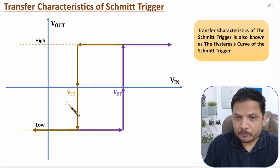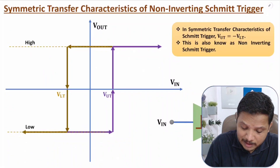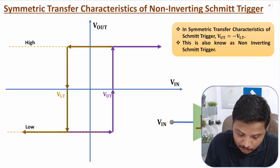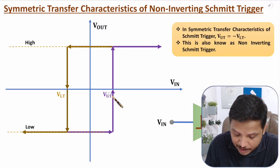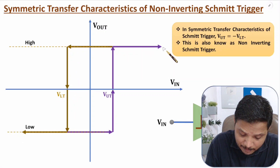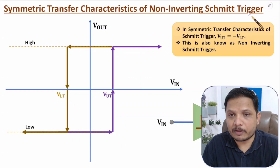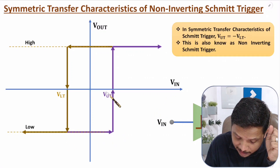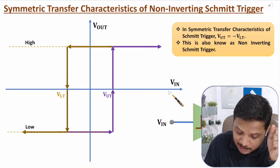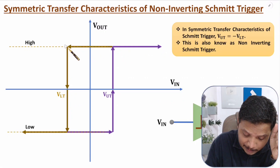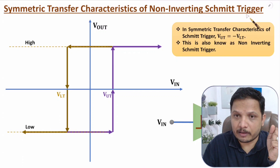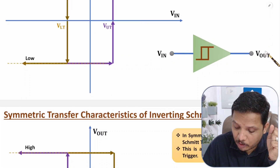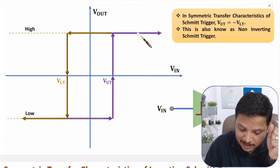Now let me explain symmetric transfer characteristics, where the characteristic is symmetric between VIN and VOUT. Symmetric means VLT equals negative of VUT, or VUT equals negative of VLT. This transfer characteristic is for the non-inverting Schmitt trigger. In non-inverting Schmitt trigger, if VIN exceeds VUT, there is a transition from low to high, and as VIN goes below VLT, there is a transition from high to low. The symbol has input VIN and output VOUT, with a shape matching this hysteresis characteristic.